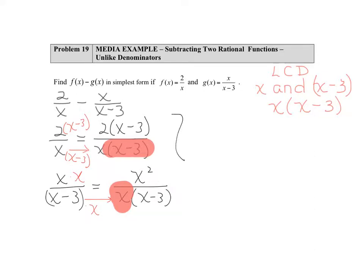Now that we have common denominators, let's rewrite our problem. 2 times x minus 3 minus x squared all over the same denominator of x times x minus 3.